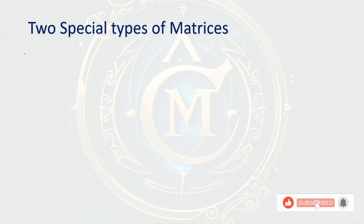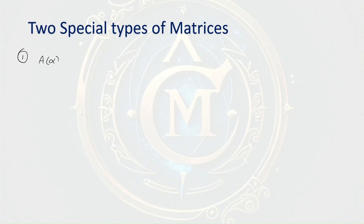The first type we are going to discuss is this matrix, which is denoted by A of alpha, where alpha is a variable parameter. The matrix looks like this: cos alpha, cos alpha, then plus-minus sin alpha, and then minus-plus sin alpha.